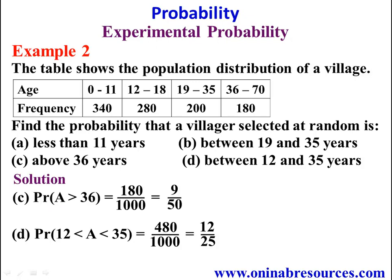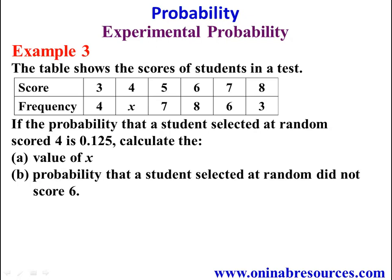We go to example 3. The table shows the scores of students in a test. We have the scores 3, 4, 5, 6, 7, 8, and the frequencies are respectively 4, X, 7, 8, 6, and 3. If the probability that a student selected at random scored 4 is 0.125, calculate: A) the value of X, B) the probability that a student selected at random did not score 6.